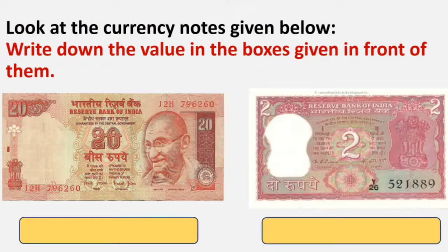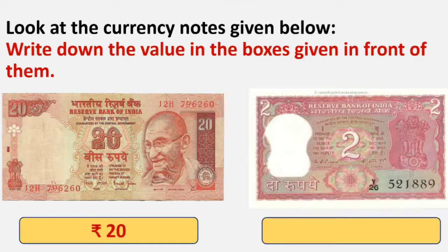Now children, look at the currency notes given below and write down the value in the boxes given in front of them. The first note is rupees 20. The next note is very rare nowadays, but you all might have seen it. It is rupees 2.